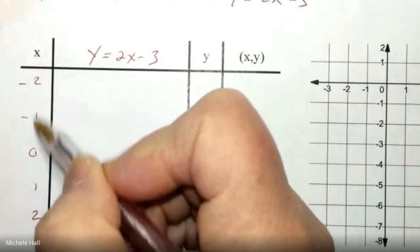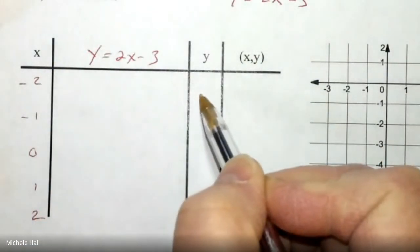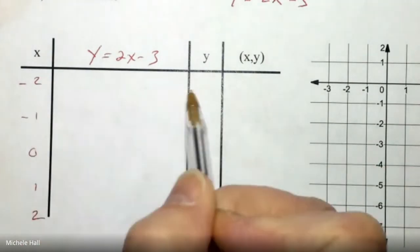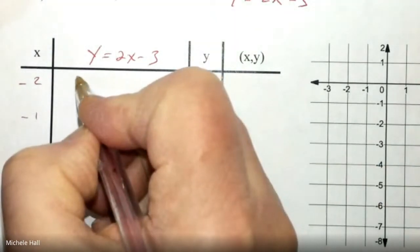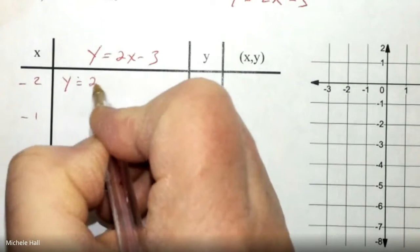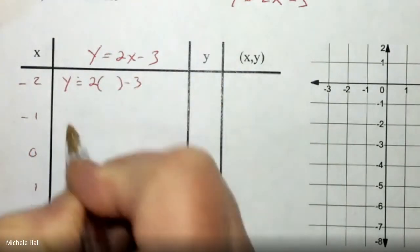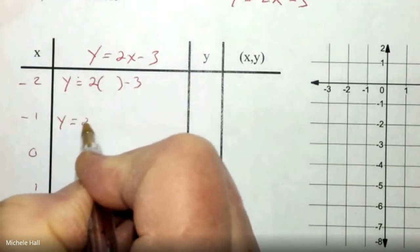And then we set it up. Our X's are not unknown. We know what the X's are. Our goal is to find the Y's so that we can graph our XY points. So we have Y equals 2 times X minus 3. And I'm just going to set all of those up right now.